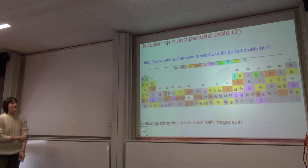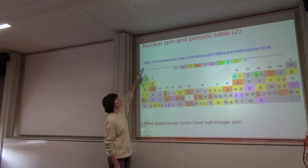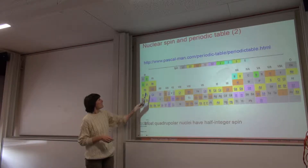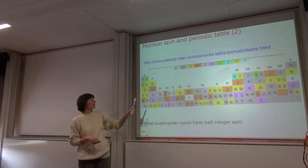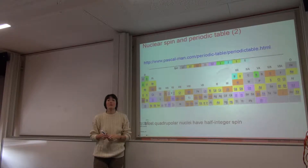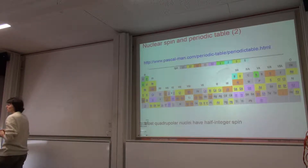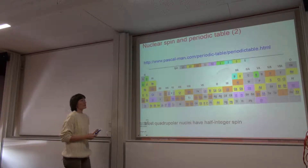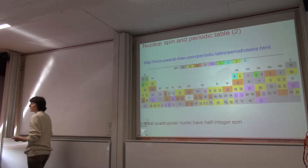A useful website to quickly get information on different types of quadrupolar species is the Pascal map page, which has an interactive periodic table where you can click on various nuclei and get relevant information as well as references to recent literature. If you're starting to work on quadrupolar species, this is a good way to begin before expanding your literature search significantly.